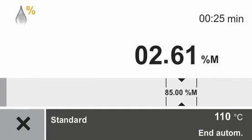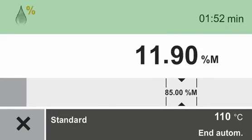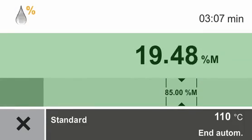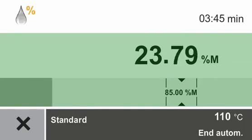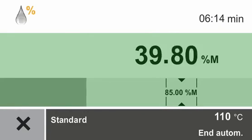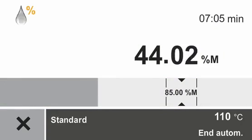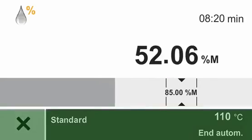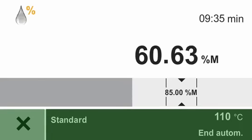You will be able to pursue the course of the moisture determination in the display. In the information bar at the upper section, you will see the actual duration of the measurement. In the central region, the actual measured value, including measuring progress, is displayed. If the target value is known, the measured progress is indicated by a bar; the target value is highlighted and the tolerance limits are indicated underneath the actual moisture content. If the target value is unknown, the measurement progress is represented by a curve chart. In the function bar at the bottom, you will see information such as the target temperature or the shutdown criteria.